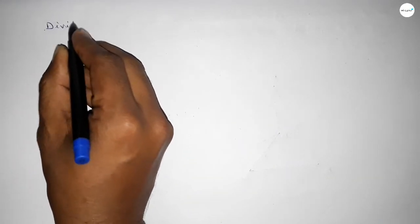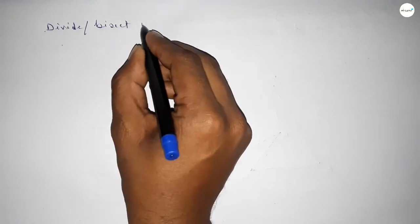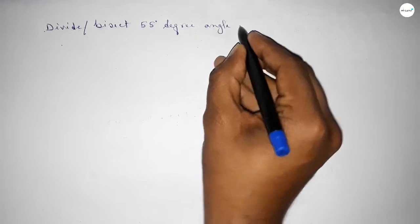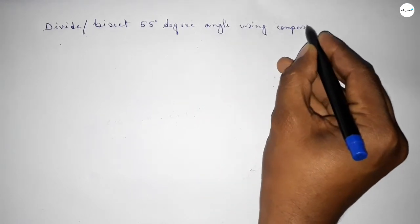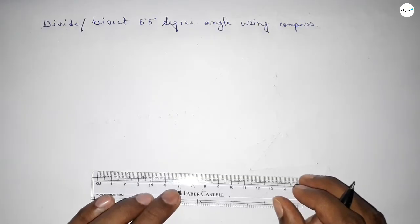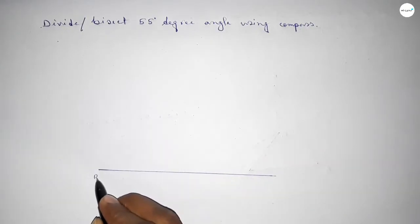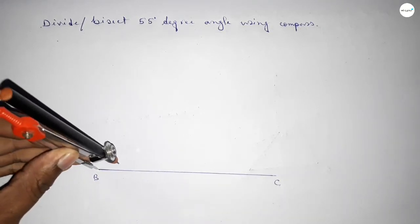Hi everyone, welcome to Essay Share Classes. Today in this video we have to divide or bisect a 55 degree angle by using a compass. So let's start the video. First of all, we have to draw here a straight line of any length, taking point B here and point C here.